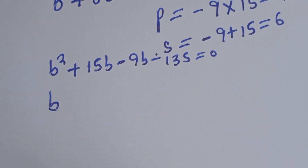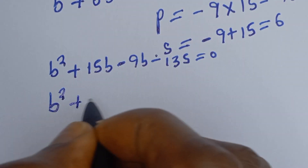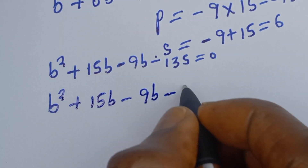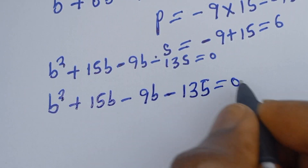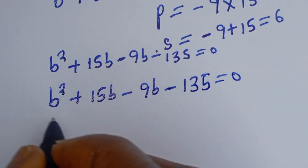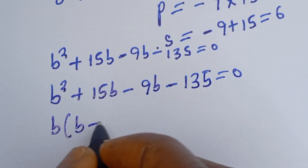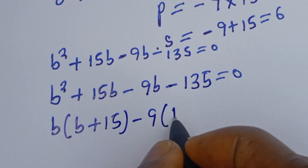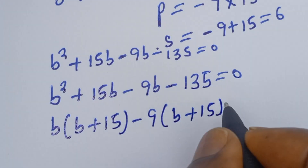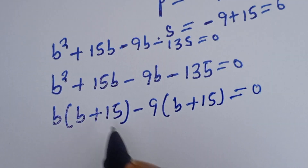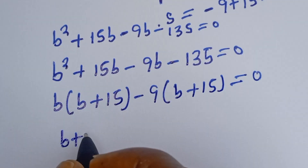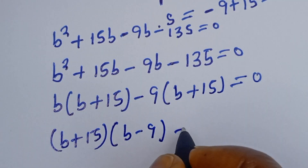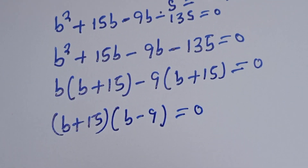Let's substitute. Then we have B squared plus 15B minus 9B minus 135 is equal to 0. Factoring, B bracket (B plus 15) — then B plus 15 is common — we have (B plus 15)(B minus 9) is equal to 0. There are two cases here.